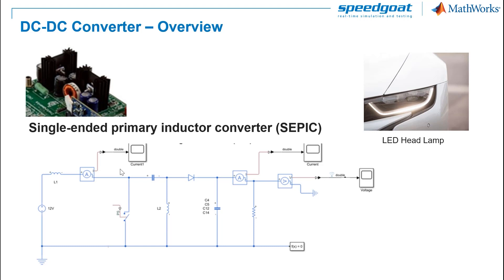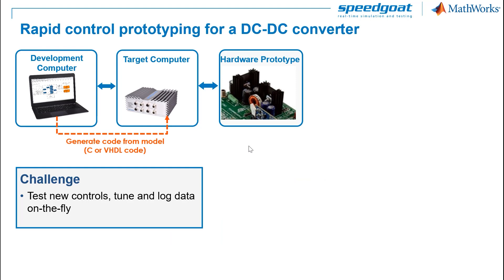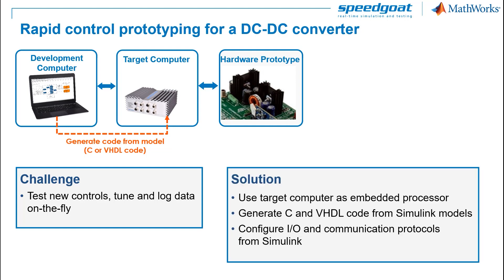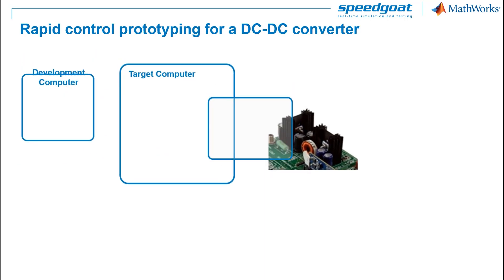SEPIC converters typically require very high frequencies in the range of hundreds of kilohertz. We'll use rapid control prototyping as we want to develop and test our control algorithm as fast as possible. We also want to adapt the control, tune the parameters, and measure data on the fly from Simulink. By using Simulink Real-Time and Speedgoat hardware, we'll aim at automatically generating C or HDL code and configure all inputs and outputs from Simulink with Speedgoat driver blocks.